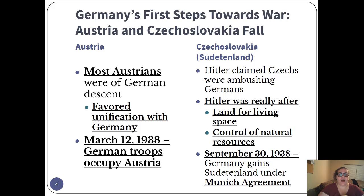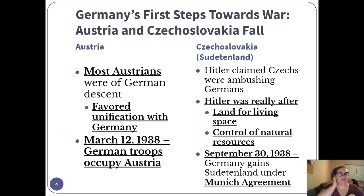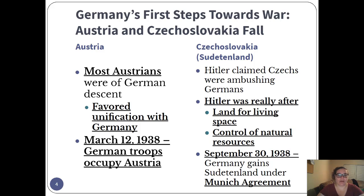He marches in and takes the Sudetenland, and people say okay, we'll let him take it. This is when Neville Chamberlain does his 'peace in our time.' Then, about a week after Hitler says he's satisfied with the Sudetenland, Hitler takes the rest of Czechoslovakia. What Hitler was really after wasn't just getting lands Germany had before World War I — Hitler was after what he called Lebensraum, German for 'living space.' He wanted land so that his new German empire of ethnic Germans could spread out and control more territory. More land means more control of natural resources.